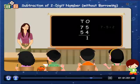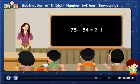Thus, the difference of 75 minus 54 is equal to 21.